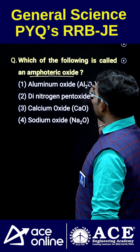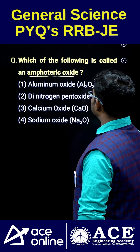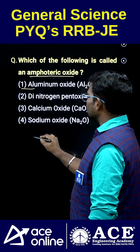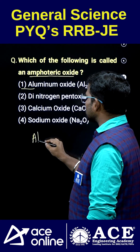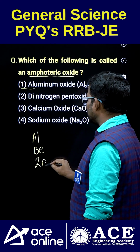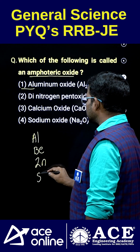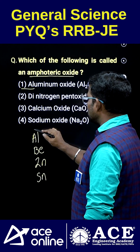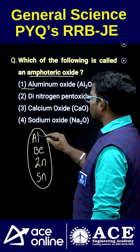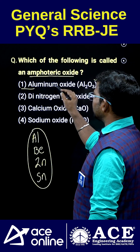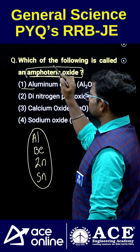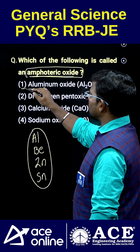Aluminium oxide is considered the correct answer. Not only aluminium oxide — if you observe beryllium, zinc, and tin, the corresponding oxides of these elements are all considered under the category of amphoteric oxides.